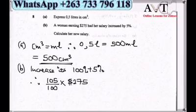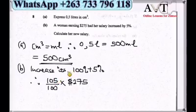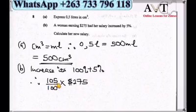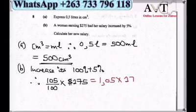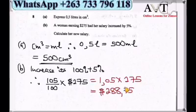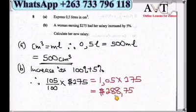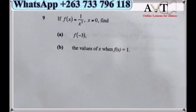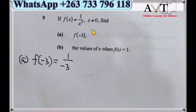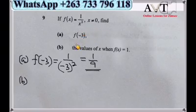Question 8b: A woman earning $275 per day receives a 5% salary increase. We add 5% to 100%, giving a multiplier of 105/100. So the new salary = 1.05 × 275. Without a calculator, applying decimal multiplication gives $288.75.